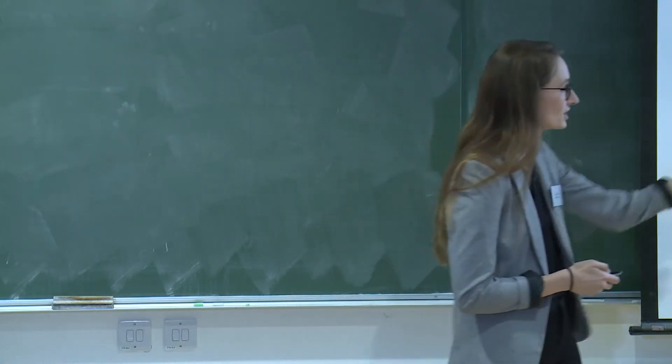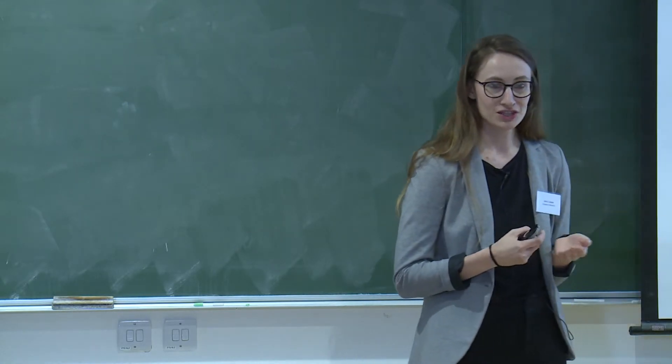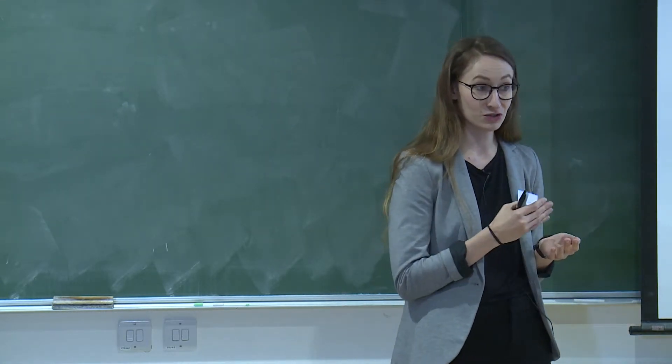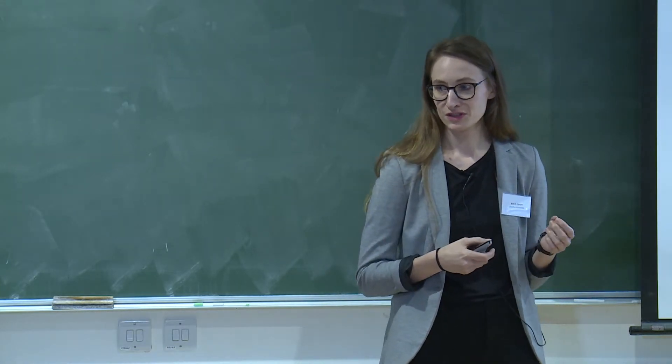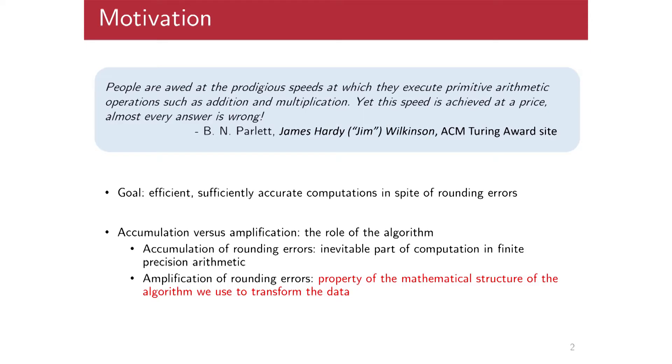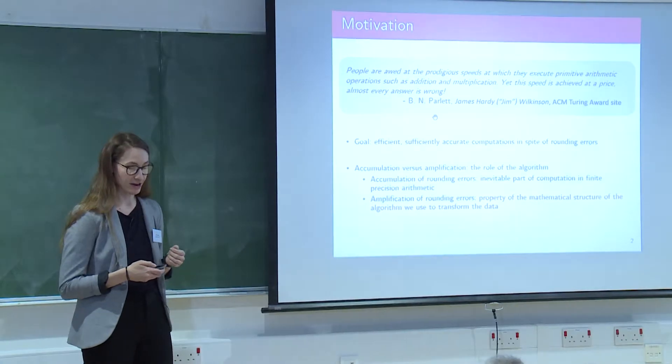And so when I say computation here, there are many aspects of a computation. We're talking about the original actual problem we're trying to solve, the method that we use to solve the problem, the algorithm that we use to solve the problem down to the specific implementation. And really the role of the algorithm here is what plays a role in the structure of our rounding errors. And so it's important to differentiate between the accumulation of rounding errors, which is really an inevitable part of finite precision computation, and the amplification of rounding errors, which is really a property of the mathematical structure of the transformation of the data imposed by our algorithm.